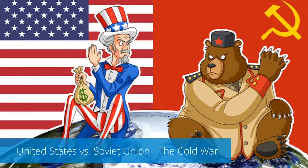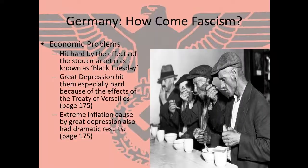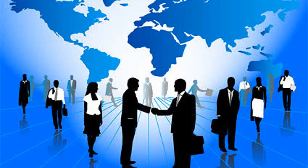World War II also led to the rise of two new superpower countries — the United States and the Soviet Union — which led to competition between capitalism in the United States and communism in the Soviet Union, as well as another global conflict called the Cold War. After World War II, many governments realized that a poor economy can lead to the rise of support for extreme political ideas like fascism and communism. So they decided to come together to encourage international trade to prevent that instability, believing that a capitalist system where citizens are free to trade with each other would encourage greater world peace.